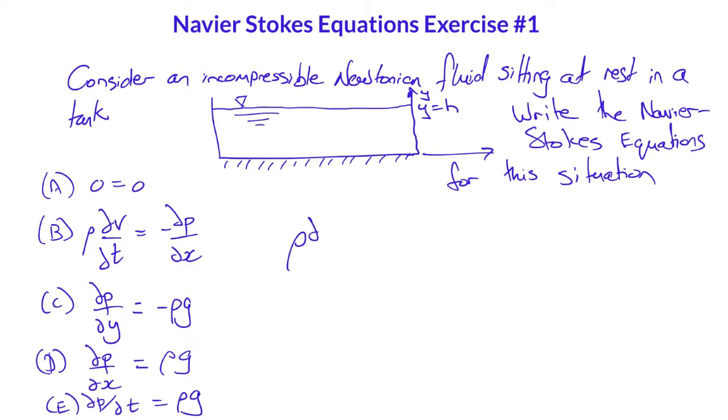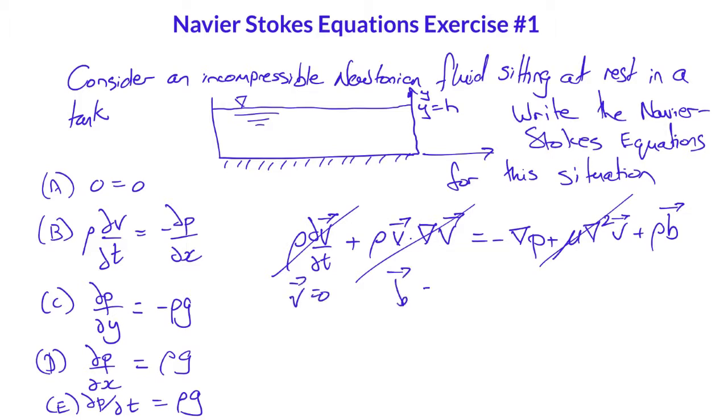So in full the Navier-Stokes equations state rho del v del t plus rho v dot grad v equals minus grad p plus mu Laplacian of v plus rho times b. But v is 0 in this situation and constant, so these three terms disappear,